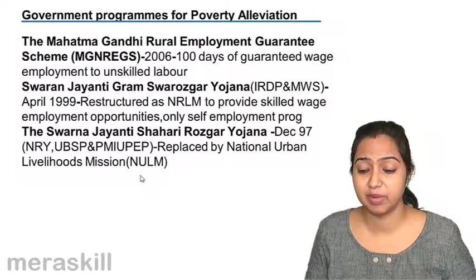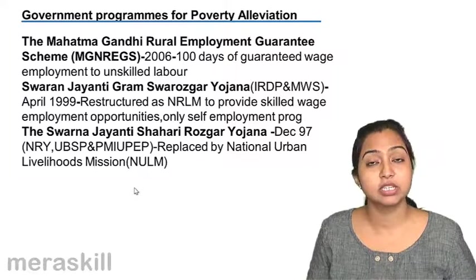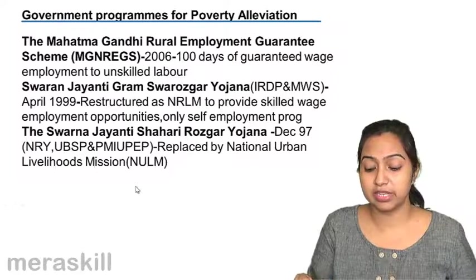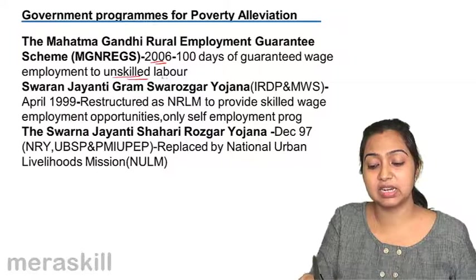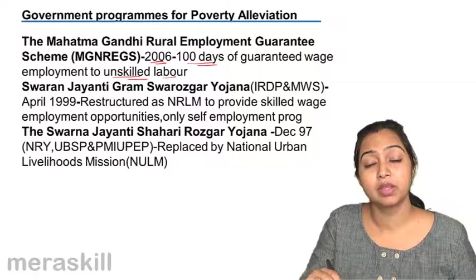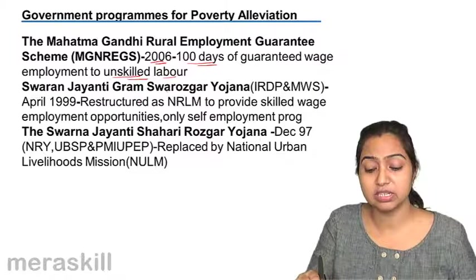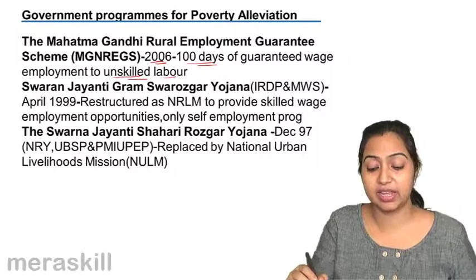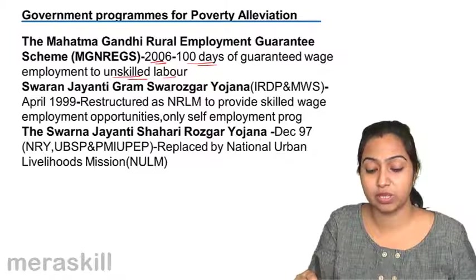The schemes that have recently been launched — one is MGNREGA, which is very famous. It is the Mahatma Gandhi Rural Employment Guarantee Scheme, which was launched in the year 2006. It is a scheme launched for unskilled laborers. 100 days of employment was guaranteed to them so that they can earn. It is for unskilled workers who do not have any skill and can work in construction sites. So, 100 days of employment guarantee was given to them.